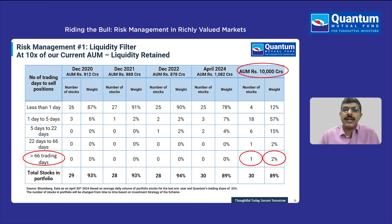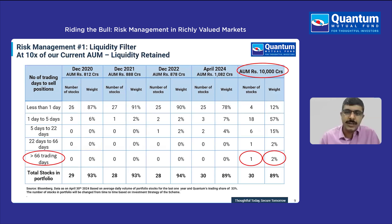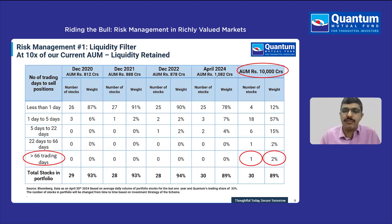A very primary requirement for us for any stock to get into the portfolio is to have a certain minimum liquidity level. For any stock to get into the portfolio, it should at least have a minimum average daily turnover of 1 million dollars, which in rupee terms comes to around 8.3 crores.